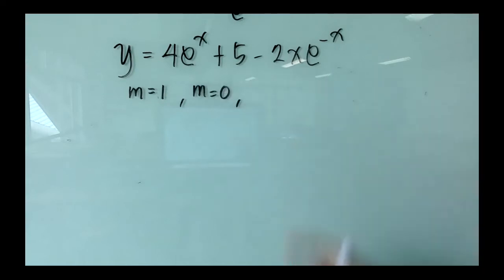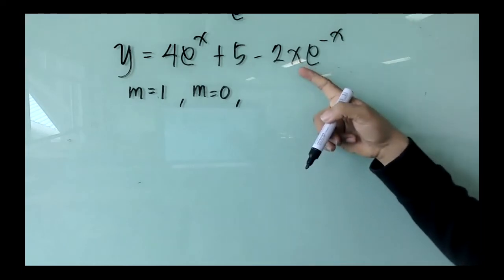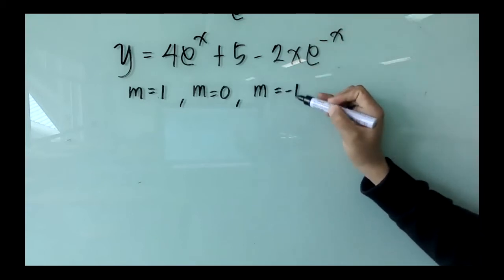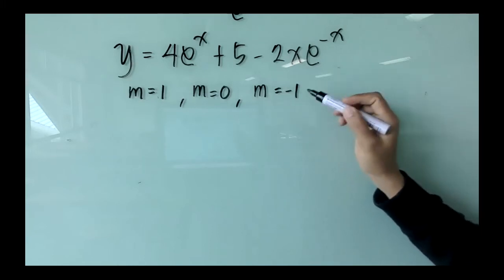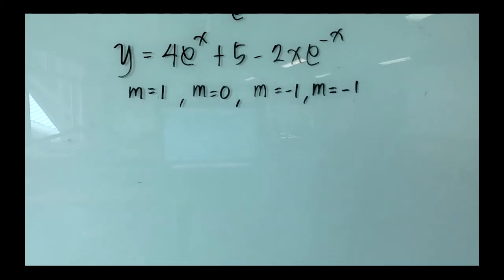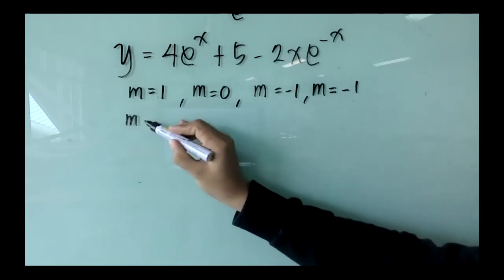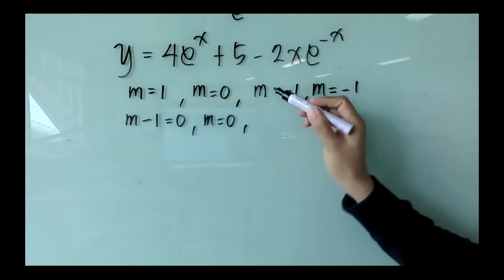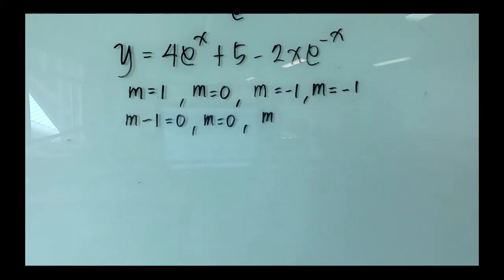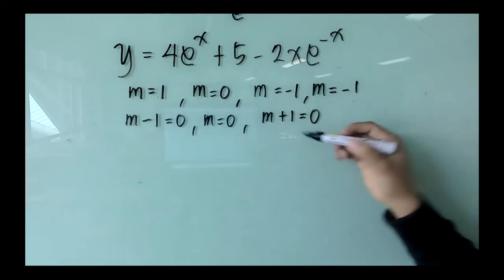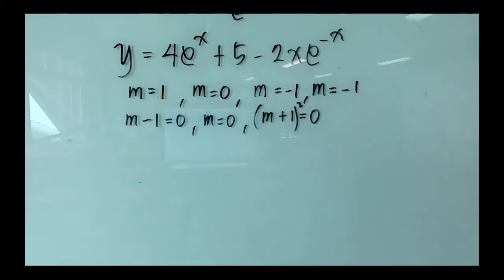For the third term, 2xe⁻ˣ, the presence of x means that the root has repeated twice. The root based on the exponential function is negative 1, and because of the x, negative 1 has repeated twice. So m equals negative 1 appears twice, giving us the factor (m + 1) squared.